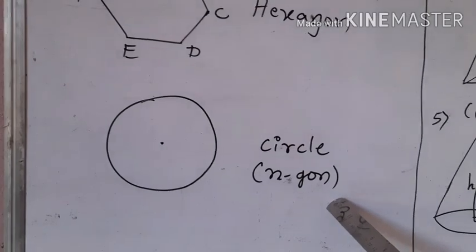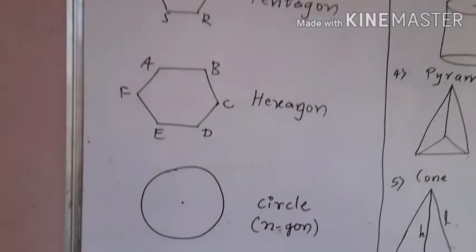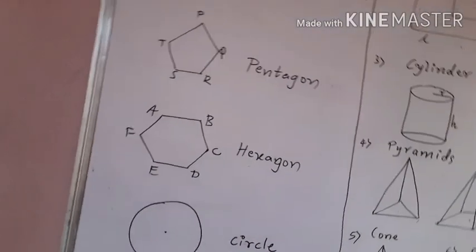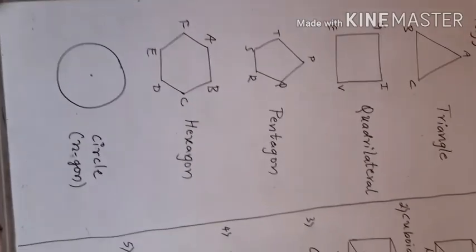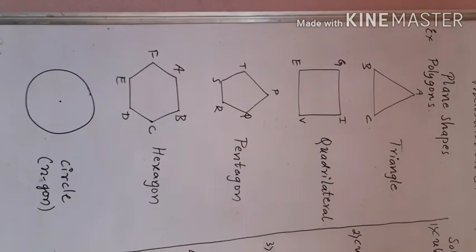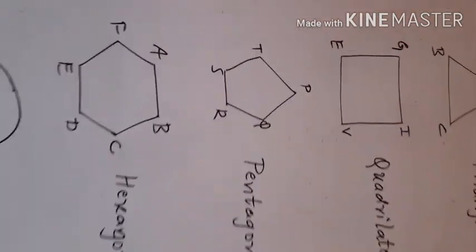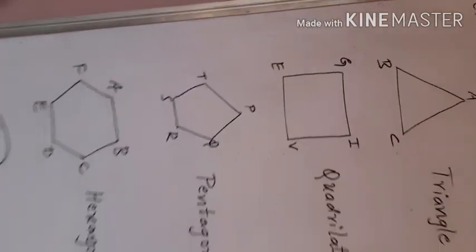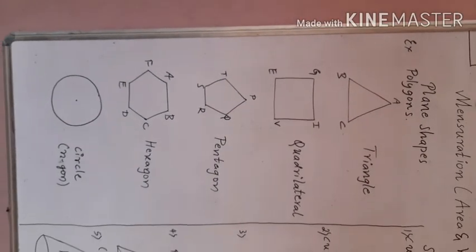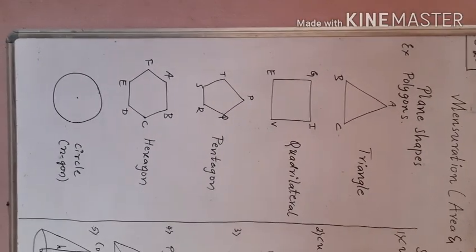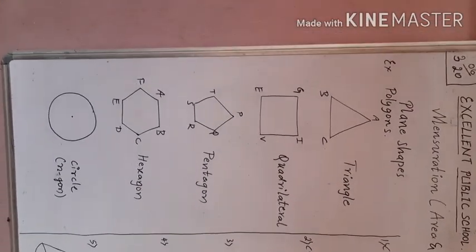All these plane shapes will have area. These plane shapes called polygons do not have volume — they have only area.